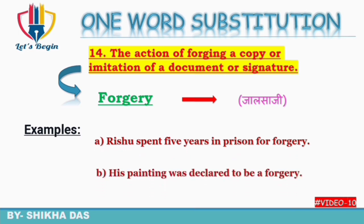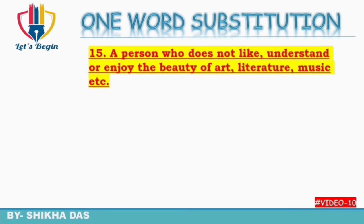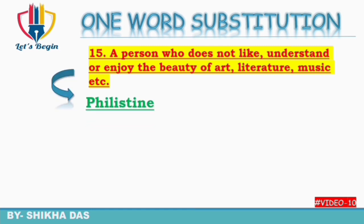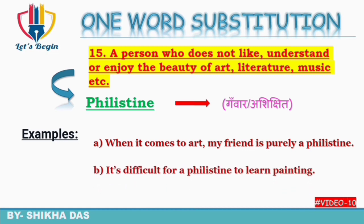Question number 15: a person who does not like, understand, or enjoy the beauty of art, literature, or music — aisa insaan jisko art, literature ya music mein zara sa bhi interest na ho, jo samajhta nahi aur enjoy bhi nahi karta. Is insaan ko kaha jayega 'philistine'. Philistine ko Hindi mein kehte hain 'gawar', 'ashikshit'. Examples: 'When it comes to art, my friend is purely a philistine.' 'It's difficult for a philistine to learn painting.'